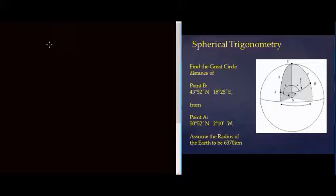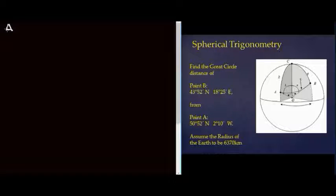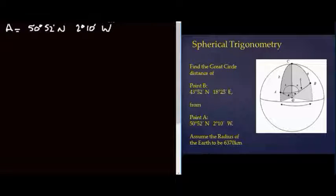So there's the description of the problem and I'm going to write down the two points on here. So I've got point A and that equals 50 degrees, 52 minutes north, 2 degrees, 10 minutes west.